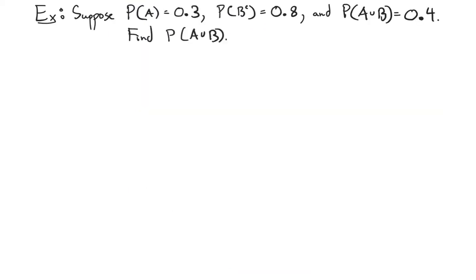Here's an example. We have events A and B where P(A) = 0.3, P(B^c) = 0.8, and P(A ∪ B) = 0.4. We want to find P(A ∩ B). Pause the video and think about how to approach this — you'll need to use the union-intersection formula and the complement formula.